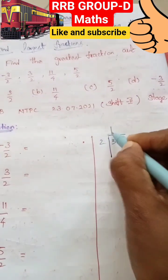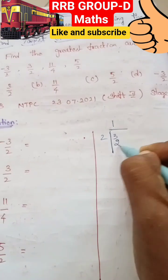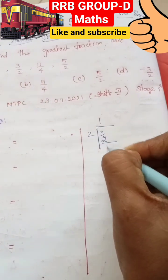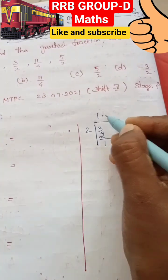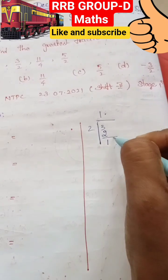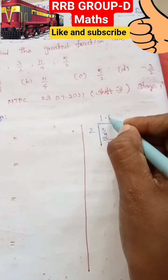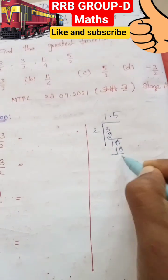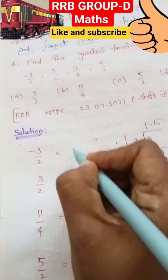1 two is 2, remaining 1. So decimal point. 5 twos are 10. Remainder 0.